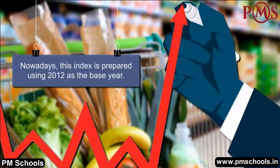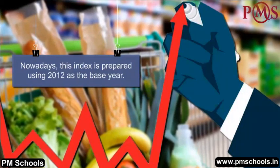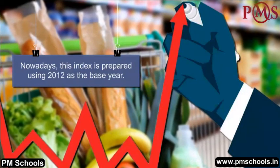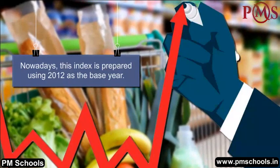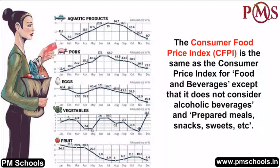Nowadays, this index is prepared using 2012 as the base year. The Consumer Food Price Index is the same as the consumer price index for food and beverages, except that it does not consider alcoholic beverages and prepared meals, snacks, sweets, etc.